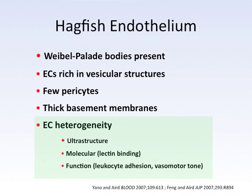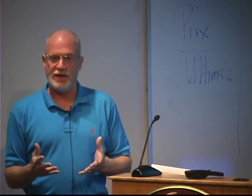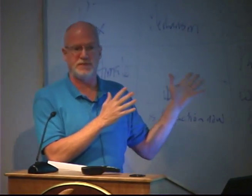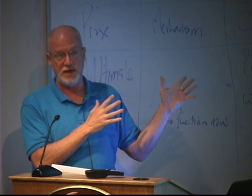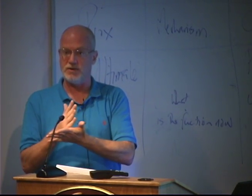We showed that the endothelium lining the sinuses and systemic vessels of the hagfish contains classic endothelial cells — including Weibel-Palade bodies very specific to endothelial cells, rich vesicular structures, and more. Importantly for today's discussion, the endothelium in the hagfish is extraordinarily heterogeneous in both structure, function, and molecular markers.